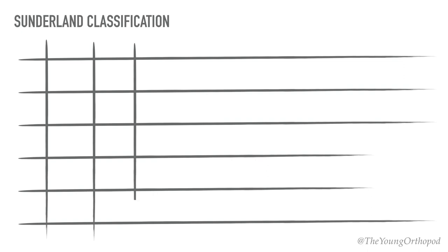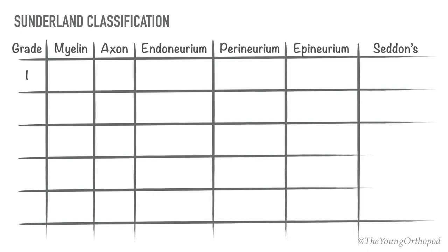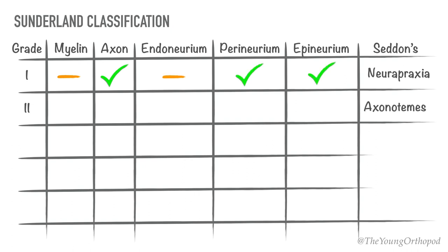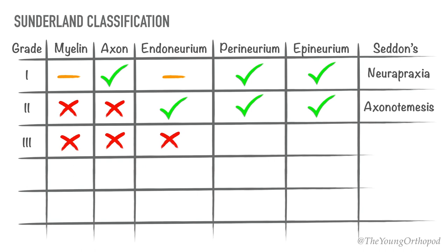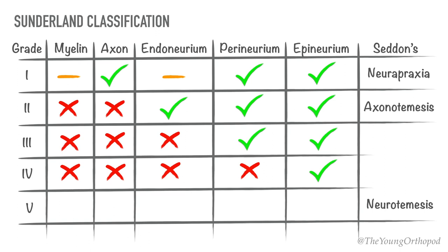The Sunderland classification grades nerve injuries according to increasing severity from first to fifth degree. First degree injury coincides with Seddon's neuropraxia and has similar features. Second degree injury corresponds to Seddon's axonotmesis. Third degree injury is worse than axonotmesis — the endoneurium is disrupted but the perineurial sheets are intact, limiting internal damage. In fourth degree injury, along with axons and endoneurial tubes, the perineurium is also disrupted and only the epineurium is intact; internal damage is severe but the nerve trunk is still in continuity. Fifth degree injury corresponds to neurotmesis, where the nerve trunk is completely divided and requires surgical repair. Second and third degree injuries show an advancing Tinel's sign.